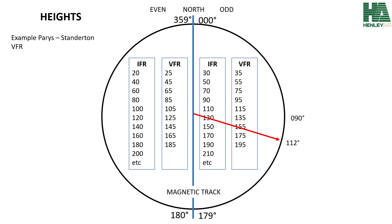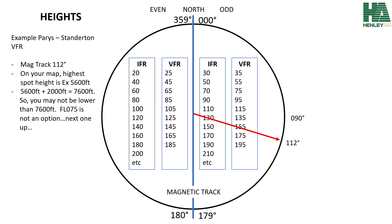If we're flying from Parais to Standerton VFR on a magnetic track of 112 degrees, and you look at your map between Parais and Standerton and find a spot height of, for example, 5,600 feet, you need to clear it by 2,000 feet, which means 7,600 feet — you may not be lower than 7,600 feet. The VFR option of flight level 075 is not an option. The next one up will be flight level 095, which will be your answer.